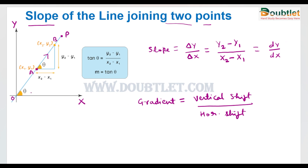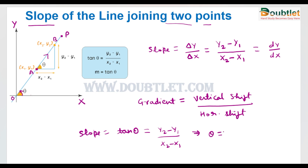To find the angle, we can represent the slope of any line by tan of theta, where theta represents the anti-clockwise direction angle measured from the positive x-axis. If we draw an angle to this line from the positive x-axis direction in the anti-clockwise direction, that is the angle theta. Its value will be y2 minus y1 divided by x2 minus x1. And if we need to find the angle theta, then we take the tan inverse of y2 minus y1 divided by x2 minus x1.